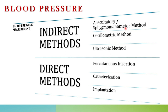In the last class we covered the auscultatory or sphygmomanometer method, where we use a sphygmomanometer along with a stethoscope. Based on the variation of the cuff pressure, we read the sounds in the stethoscope and take readings on the manometer to find the systolic and diastolic pressure. The second method is the oscillometric method, where based on cuff pressure variation we measure the oscillations happening in the blood vessels.